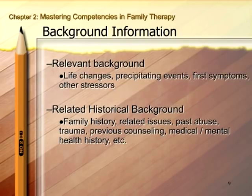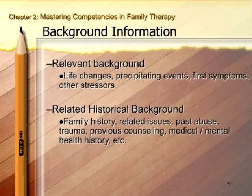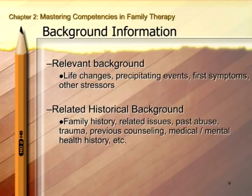You want to look for any precipitating events — do they attribute their symptoms to a particular situation? When were the first symptoms and what were they? And any other stressors helpful for understanding the presenting problem. In the second section, highlight related historical background such as family history, any related issues, past incidents of abuse — whether as a child or adult — past incidents of trauma, any previous counseling, and any significant medical or mental health history. All of these can be very helpful to know about as you begin treatment.